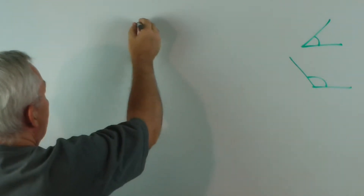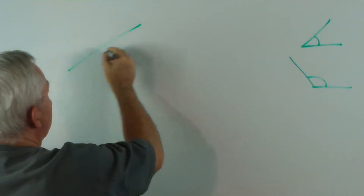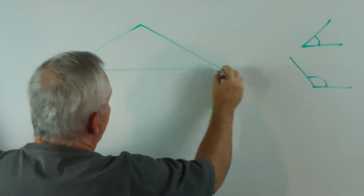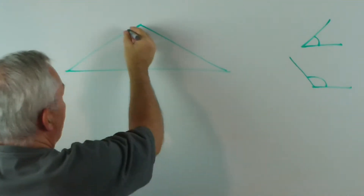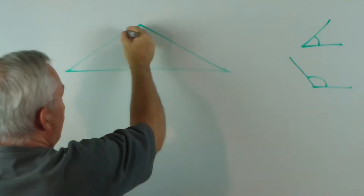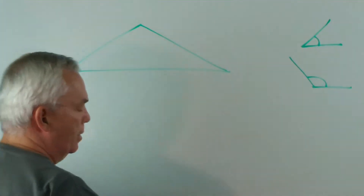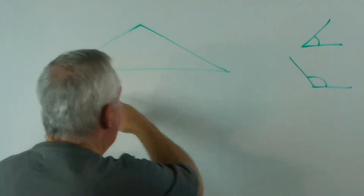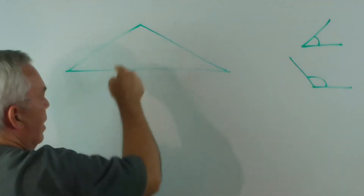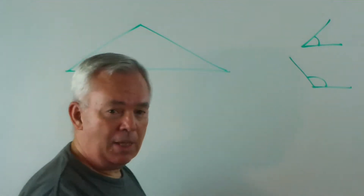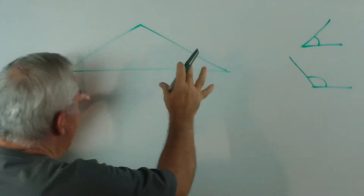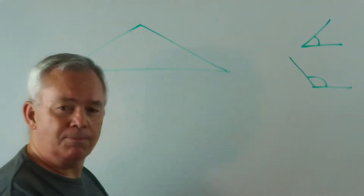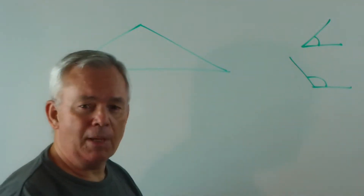I want you to draw an obtuse angle triangle — that is, a triangle with an obtuse angle in it. You can put it in any corner; I think having it up at the apex is simpler. Make sure it's a fairly big one on a bit of scrap paper.